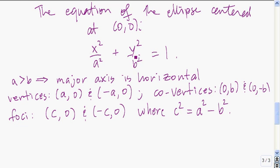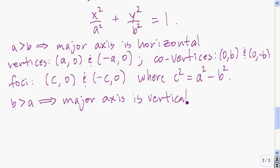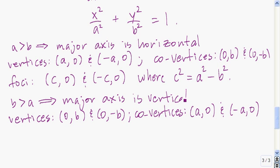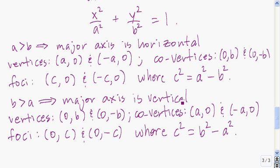If the number below y-squared is larger than the number below x-squared, then the major axis is vertical. Since the major axis is vertical, the vertices are going to be on the y-axis: zero comma b and zero comma negative b. The co-vertices are a comma zero and negative a comma zero. To find c-squared, we always take the larger number minus the smaller number — that is, the larger one minus the smaller one of the denominators.